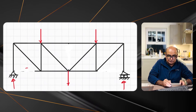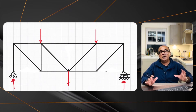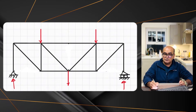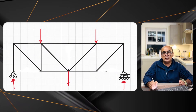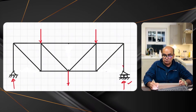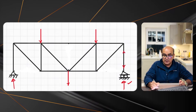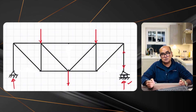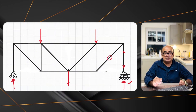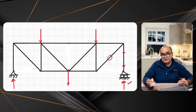Now we have identified the zero force members. It's time to find out tension and compression. Starting on the right side: when the reaction is upwards, the vertical force in the member has to be downwards, meaning the arrow points towards the joint — indicating compression. The vertical component of the adjacent member also has to be pointing downwards.